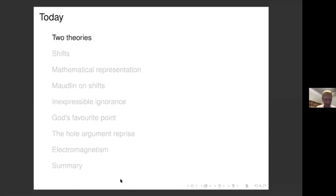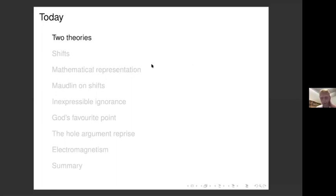Here is the plan: I'm going to start by reminding you of the relevant details of Newtonian gravity and general relativity — very quickly. I'll then remind you of the relevant details of certain famous shift arguments: the Leibnizian static shift, the Leibnizian kinematic shift, and the hole argument of general relativity. I'm then going to make some brief asides regarding mathematical representation, essentially channeling a nice recent paper by Sam Fletcher in Foundations of Physics from 2020. Then I'll remind you of Maudlin's views on both the hole argument and the static shift, where we'll see this epistemological indexical argument appearing.